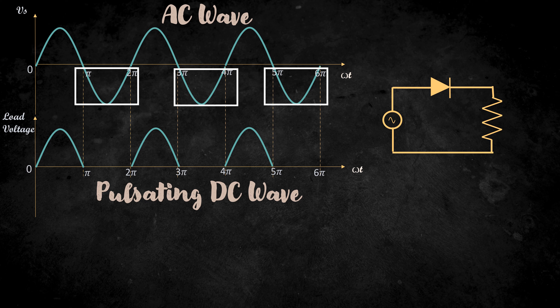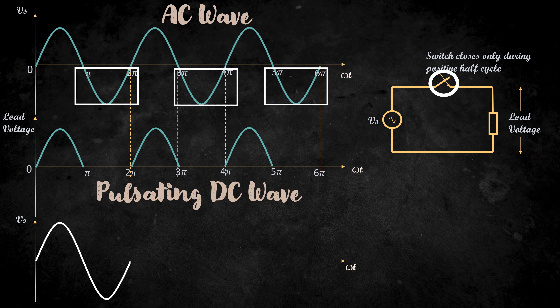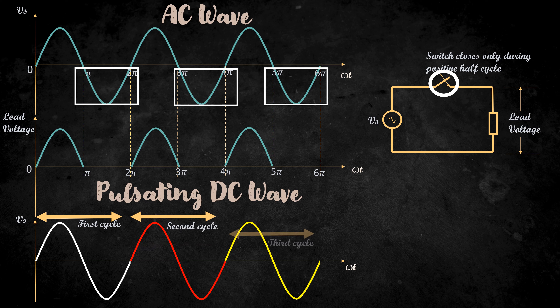First, let's replace the diode with a switch. Now, we have to design this switch such that it closes during the positive half cycle and opens during the negative half cycle. For that, let's see what is a cycle. The cycle is one complete waveform. So in this, this is the first cycle, this is the second cycle, and this is the third cycle. We also know that frequency is the number of cycles in one second.